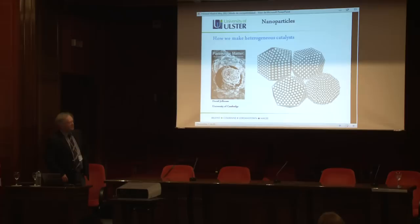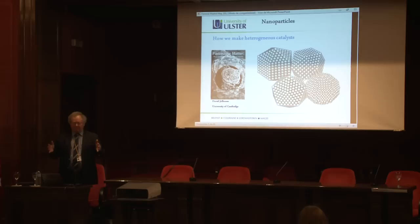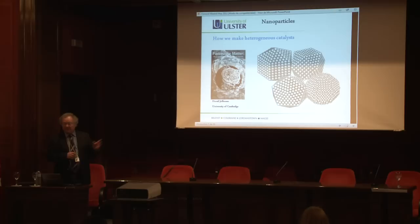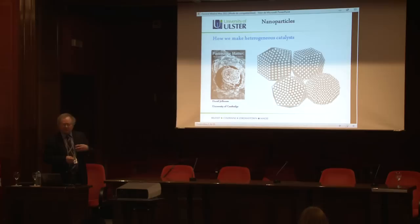I first started to learn about nanoparticles when I listened to David Jefferson, a crystallographer at Cambridge. Crystallographers know that when you take a bulk material like gold or platinum, which is pretty inert in bulk, and start to reduce it down to particles of just a few hundred atoms, they become crystalline, you get vertices, and they start to get electrically charged. Chemistry is all about electrons — this is how we make heterogeneous catalysts, like those in catalytic converters. What we know very little about is how this surface chemistry, Fenton chemistry, interacts with our own wet biochemistry.